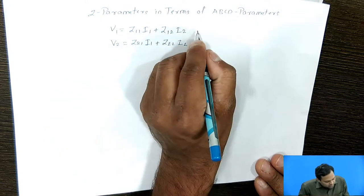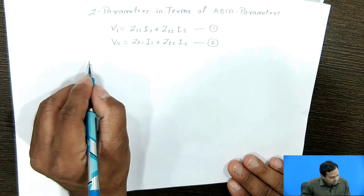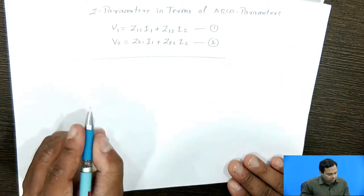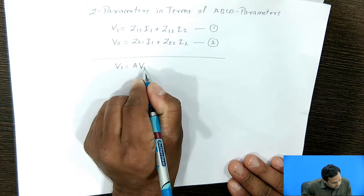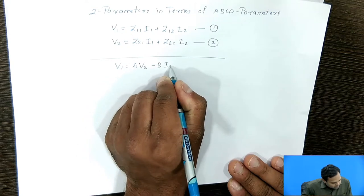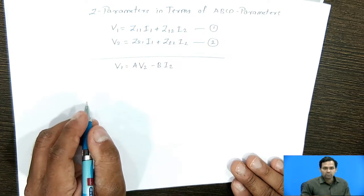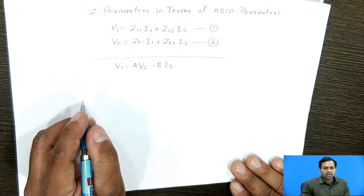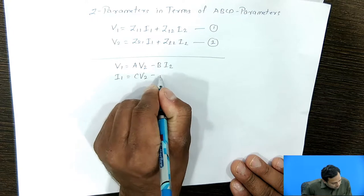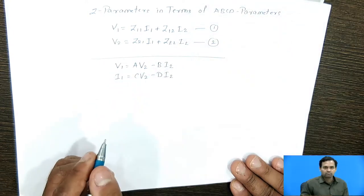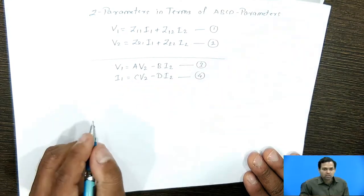Now we will write equations related to ABCD parameters. In that case, V1 = A·V2 − B·I2, where V1 is the dependent variable and V2 as well as I2 are independent variables. The second equation is I1 = C·V2 − D·I2. We will label these as equation 3 and equation 4 respectively.